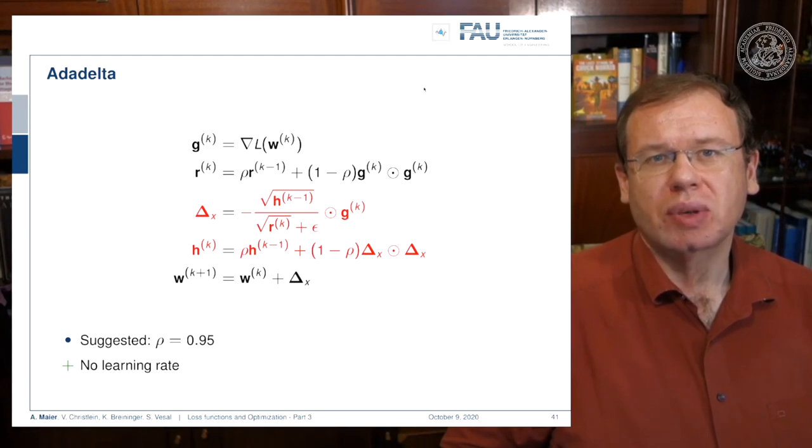They use essentially RMSprop and get rid of eta. We already have seen r—it is the variance that is computed in a dampened way. Then in addition they introduce this delta x. It's a weighted combination of some term h and the r that we have seen previously, multiplied to the gradient direction. So this is an additional dampening factor that replaces the eta in the original formulation. The factor h is computed again as a sliding average over the delta x as an element-wise product. So this way you don't have to set a learning rate anymore.